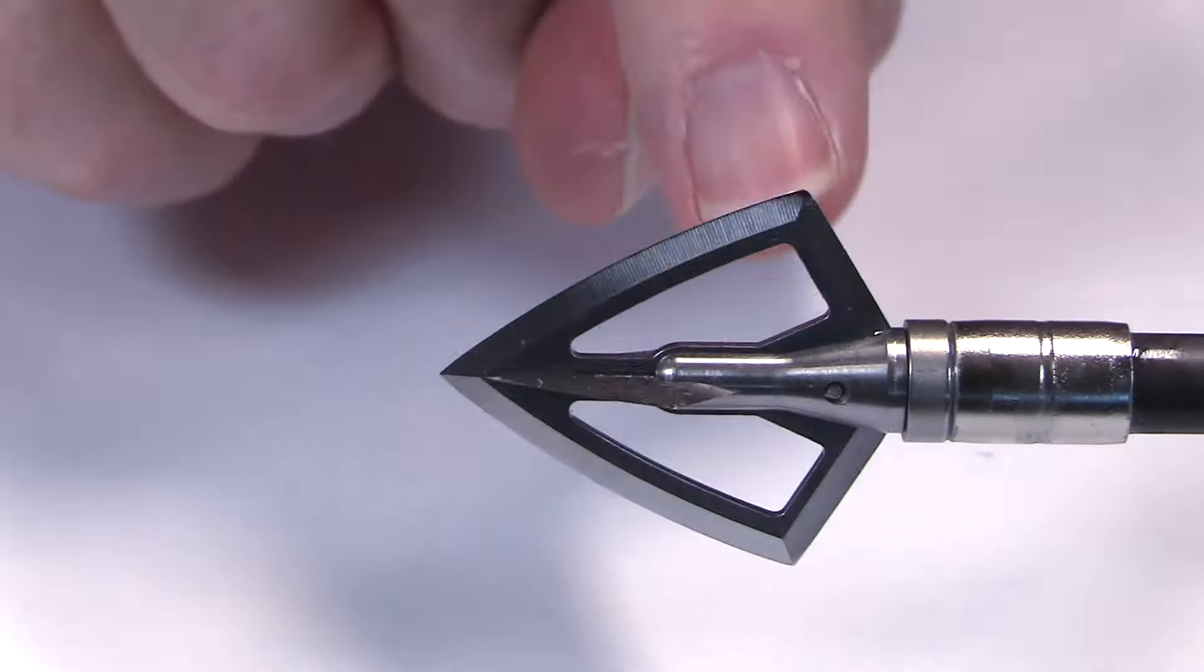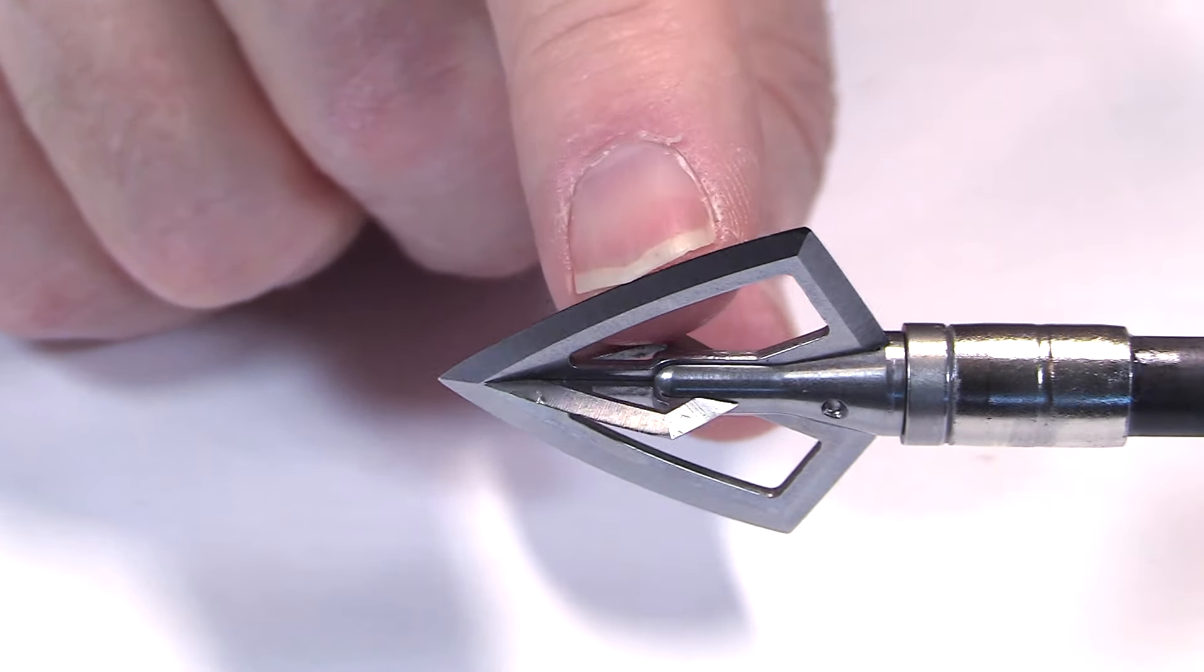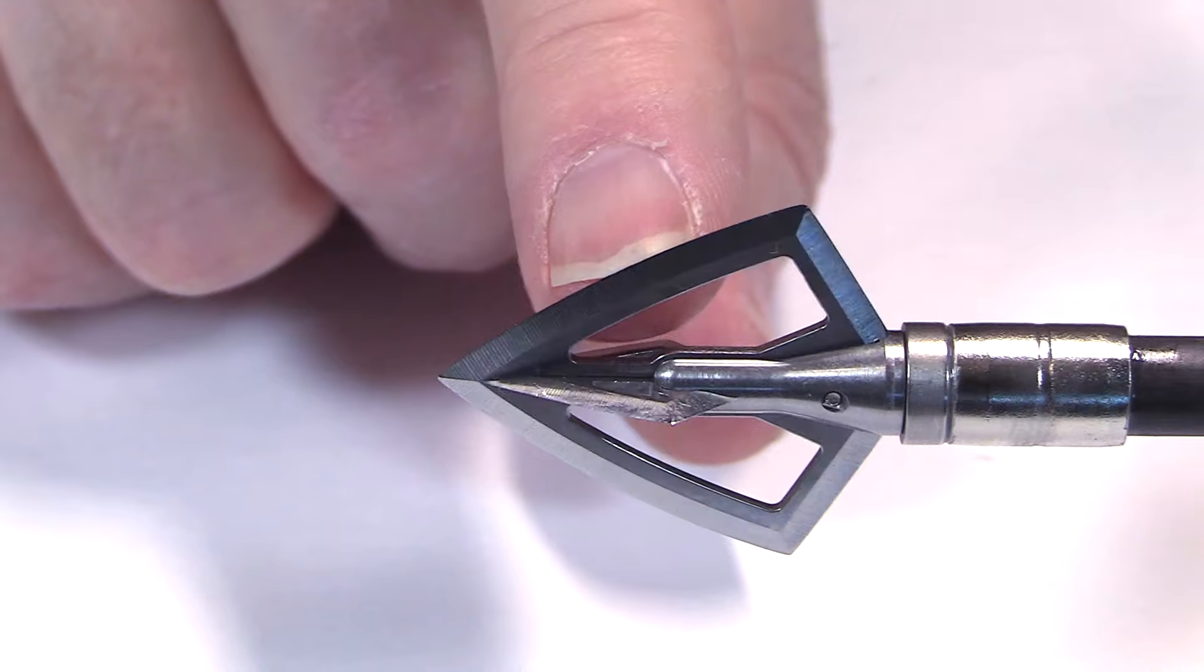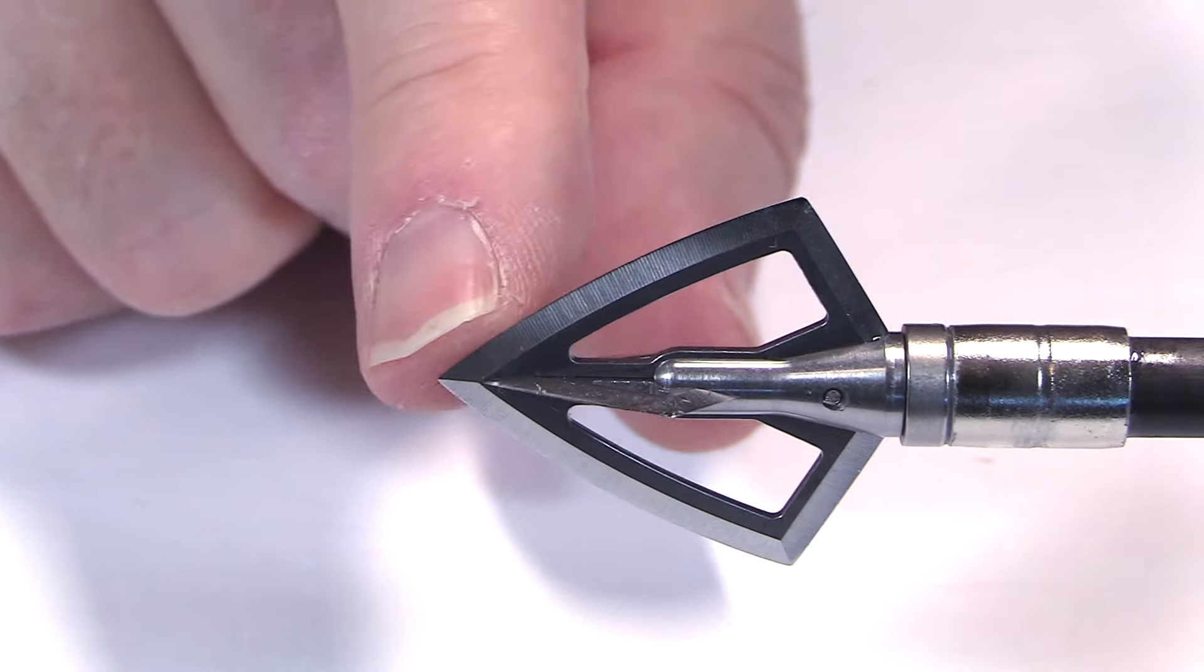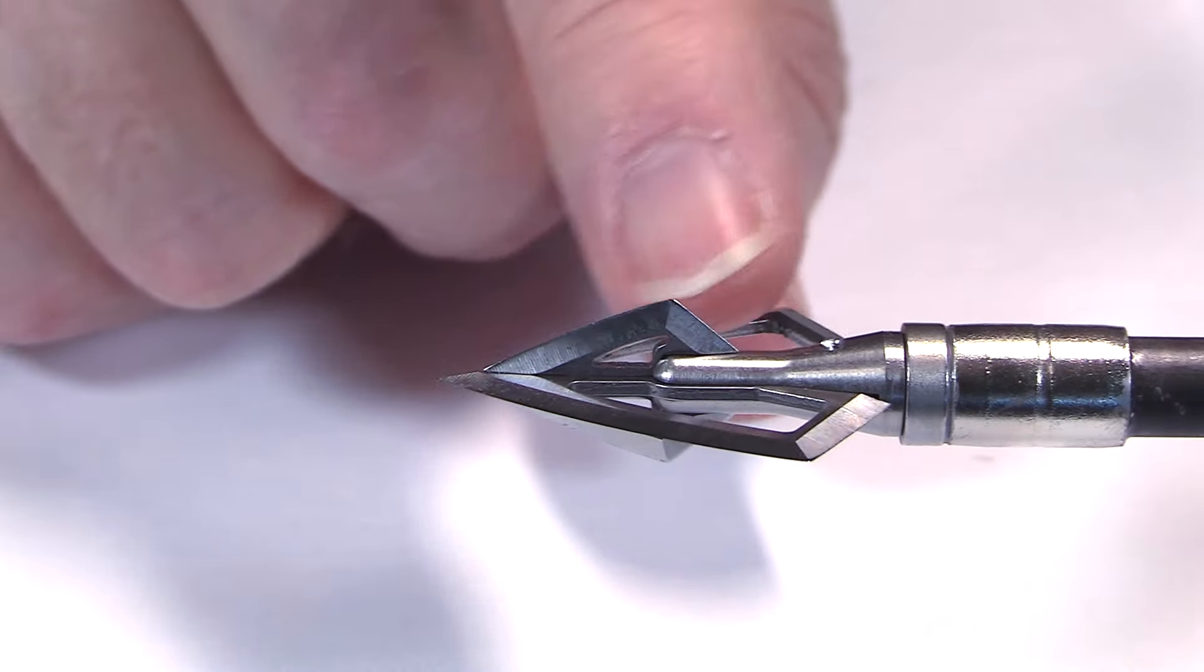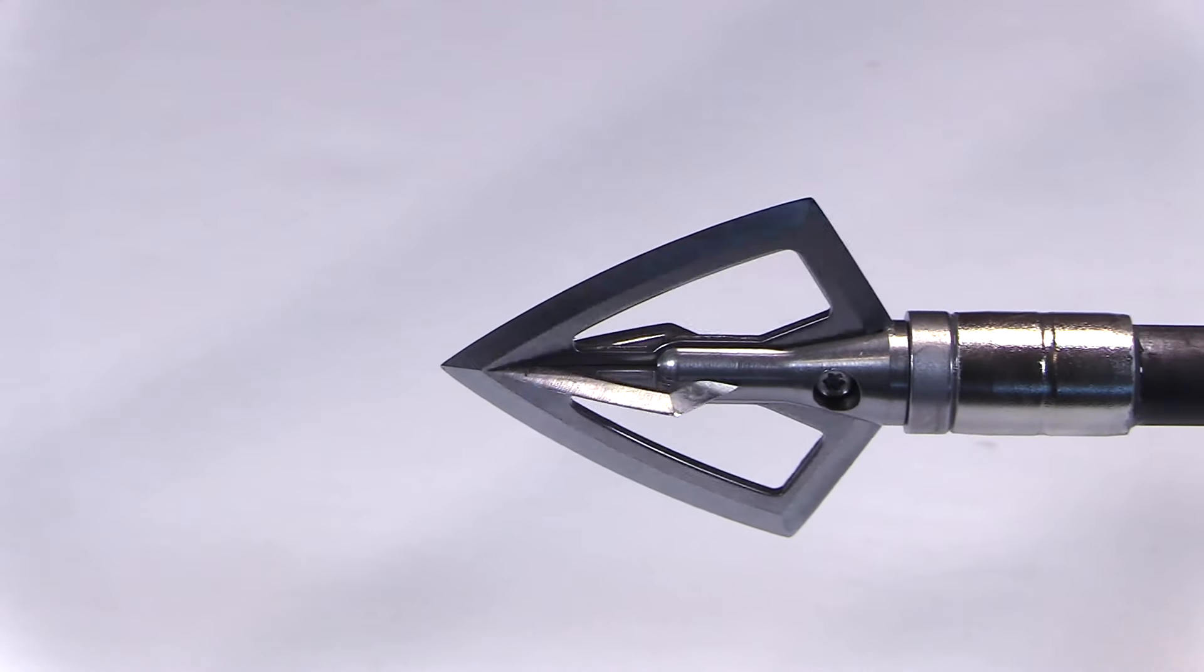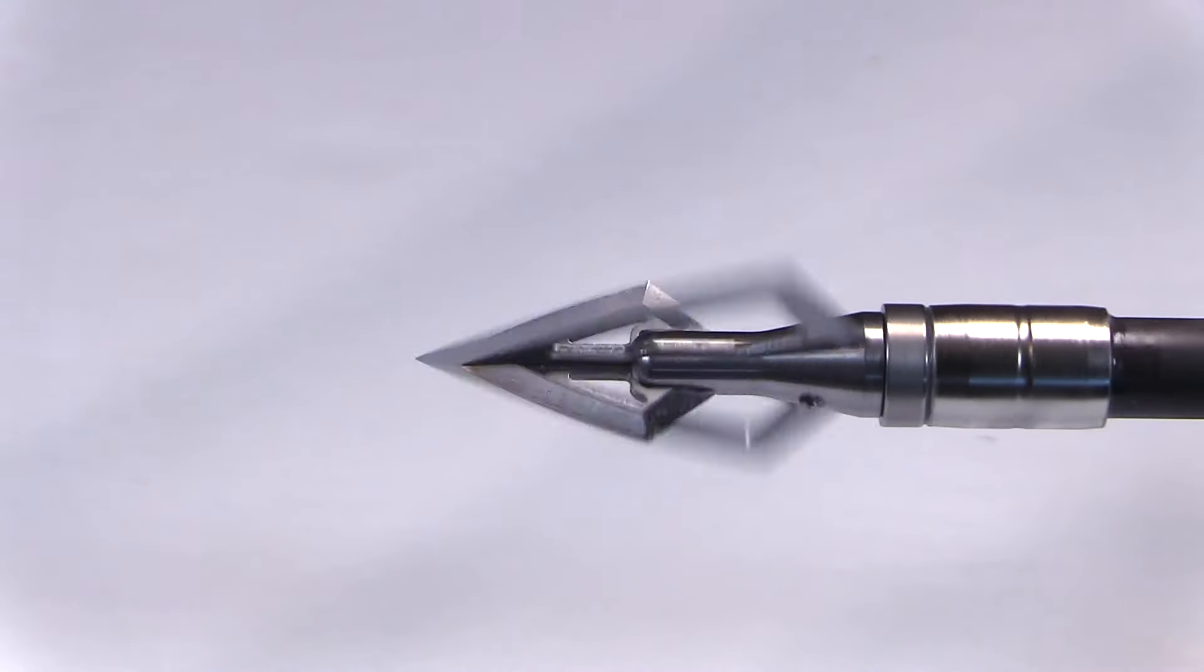For resharpening, sometimes curved blades can be problematic. However, if you use a Stay Sharp Guide C model sharpener for curved blades, concave or convex, it's going to make quick work of it and make it pretty easy to sharpen. Really eager to put this head to the test and see how it performs.